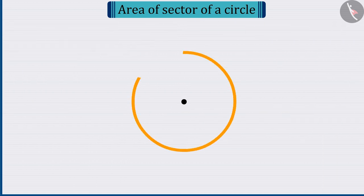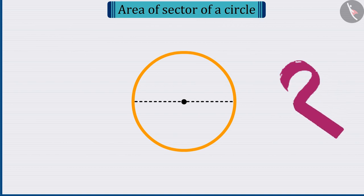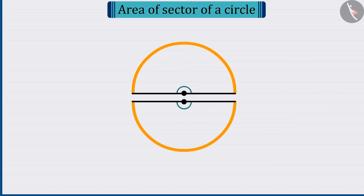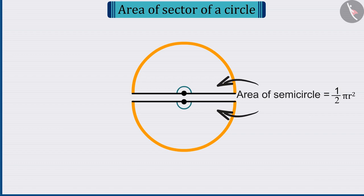Let us consider one more circle. If we divide the circle into two parts, what will be its area? Correct! If the circle is divided into two, then it becomes what is called a semicircle. Each of whose area can be found with the help of 1 by 2 pi r square.